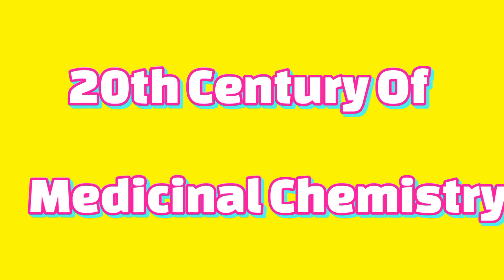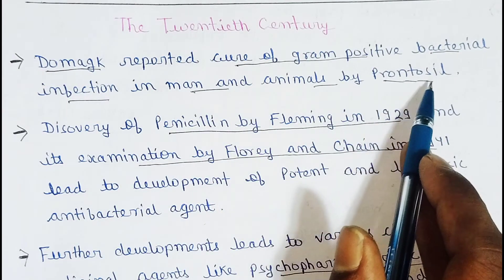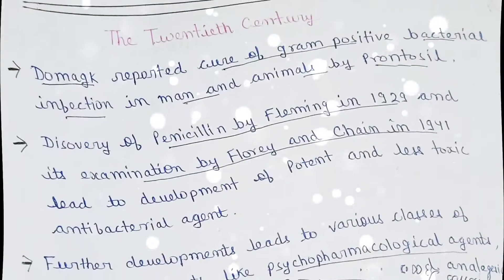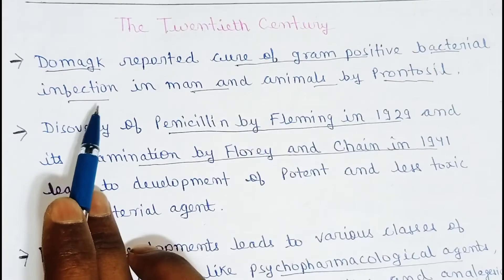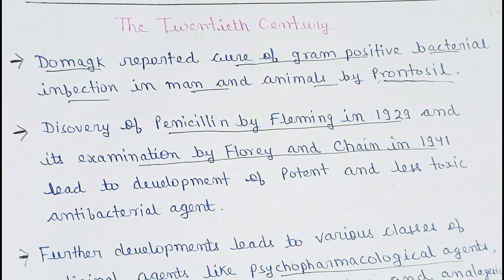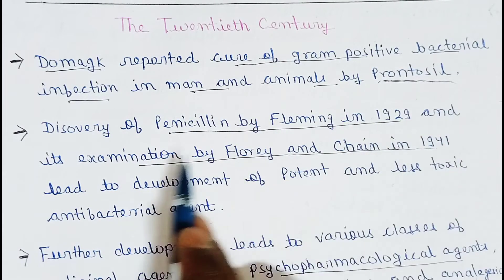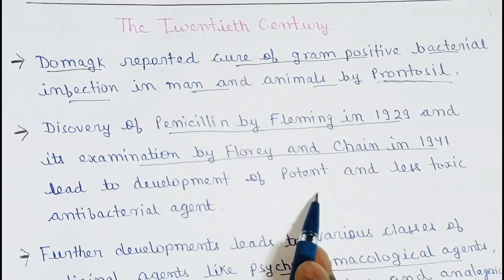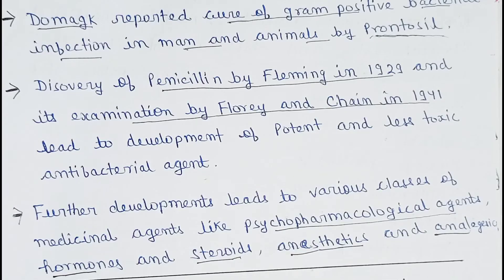Domagk reported cure of gram-positive bacterial infection in men and animals by prontosil. उन्होंने prontosil का प्रयोग करके gram-positive bacteria से जो human या animal बीमार होते थे, उनको cure करने का तरीका ढूंढा। Discovery of penicillin by Fleming in 1929, and its examination by Florey and Chain in 1941, led to the development of potent and less toxic antibacterial agents. Penicillin एक anti-bacterial agent था और less toxic भी था, इसलिए इसका therapeutic use में लाया गया और bacterial diseases को ठीक किया गया।